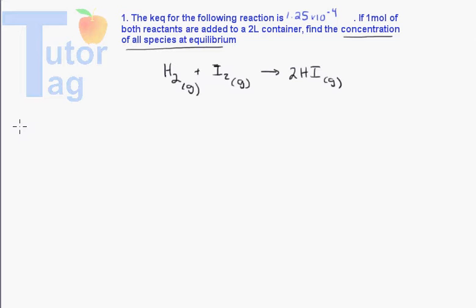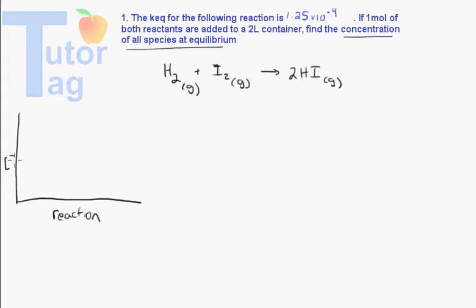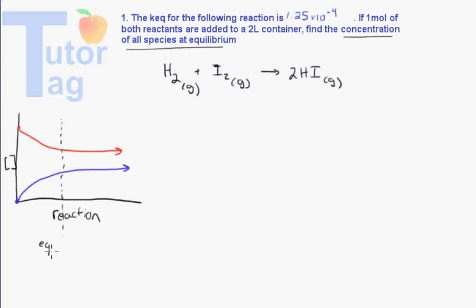Let's look back and think about what we did before on this. We had a graph where the x-axis was the reaction progress and the y-axis was concentration. The reactants started out high and flattened out, and the products started out low and flattened out at some point. That point where concentrations remained constant was called the equilibrium point.